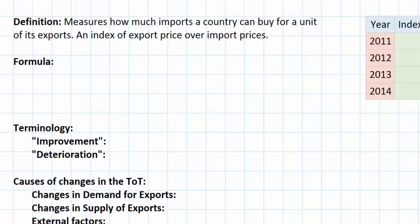If you've been studying economics for a while you've probably come across indexes before. For example, in macroeconomics you may have learned about the Consumer Price Index. The CPI is how we measure inflation in a nation — it's simply the price of a particular basket of goods in one period of time divided by the price of the same basket of goods in another period of time. To measure terms of trade we basically use the same method.